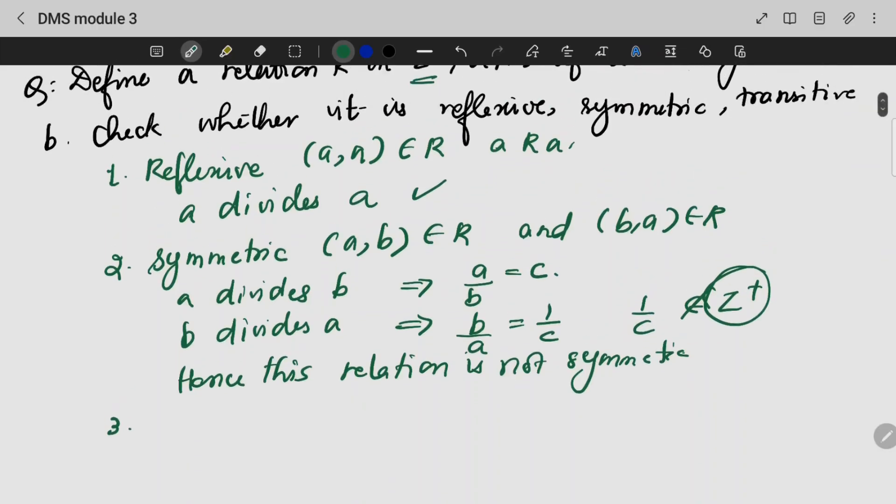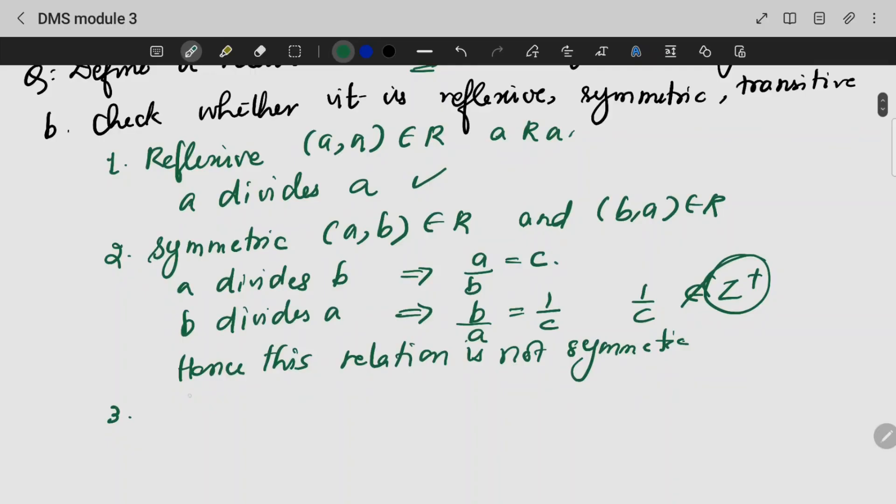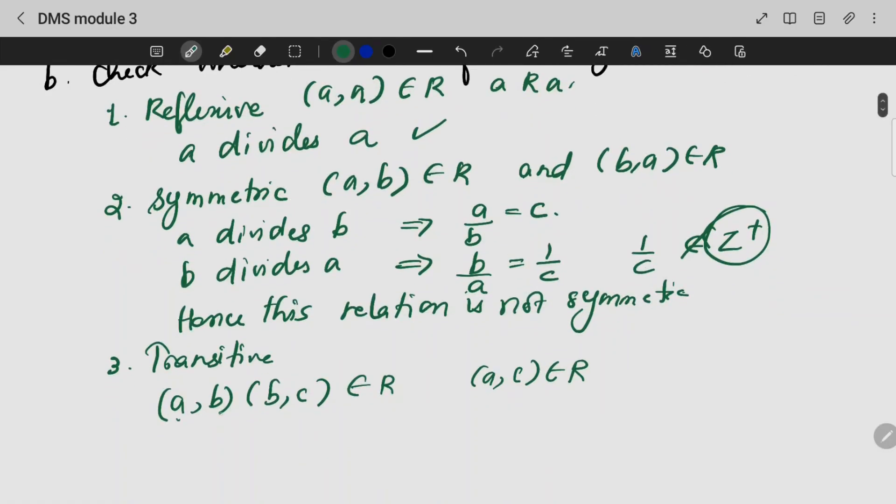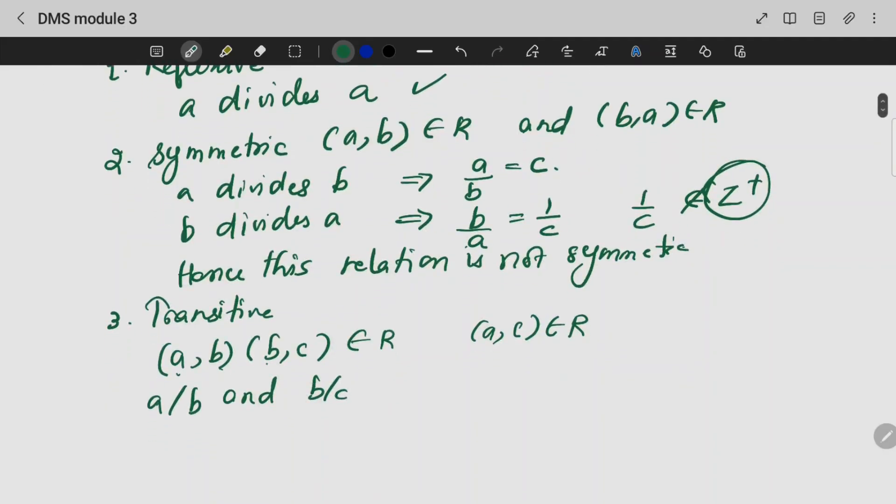Now let's look at transitive. We can say that (a,b) and (b,c) are elements of R. That means a divides b, and b divides c. Does a divide c?